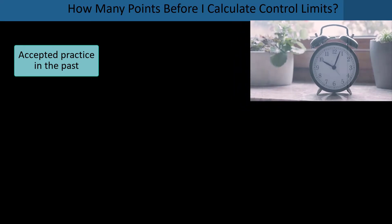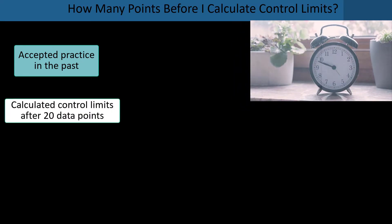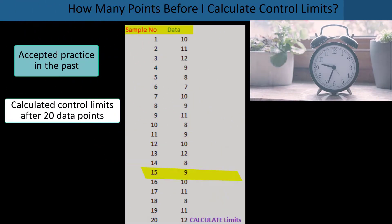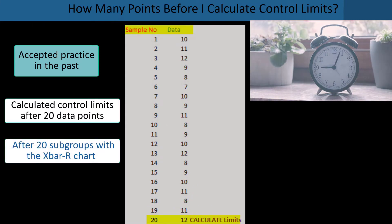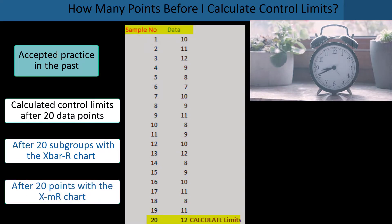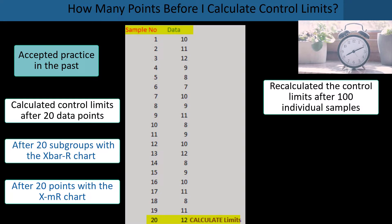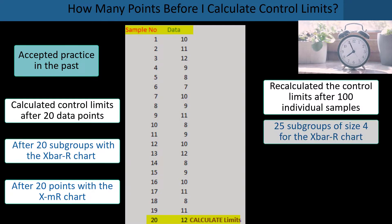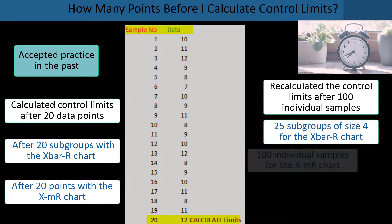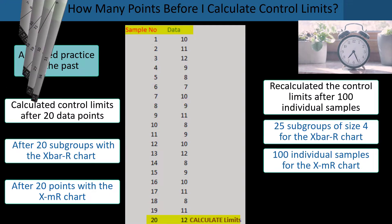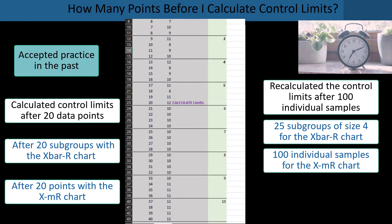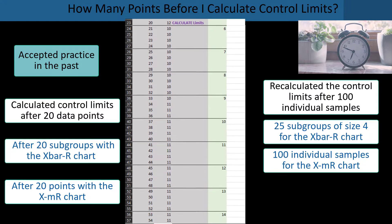So how many points before I calculate control limits? Well, the accepted practice in the past was you calculated control limits after 20 data points. Whether you had an X bar and R chart or an individual's chart, it was after 20 points. Then you recalculate them after you had 100 individual samples. So if it was an X bar and R, the subgroup size of 4 would be 25 subgroups. Individual's chart, it would be 100 individual samples.